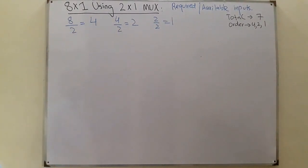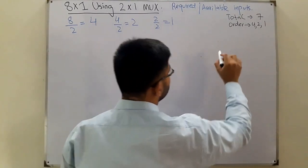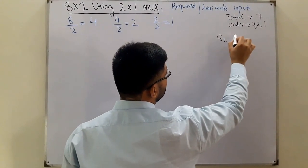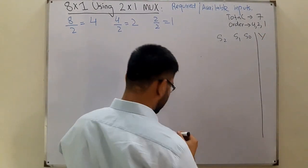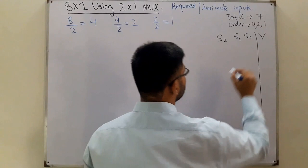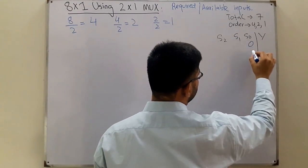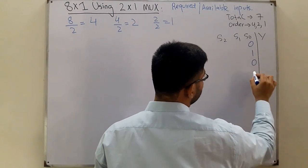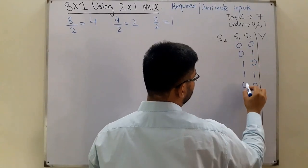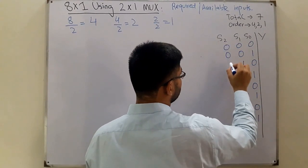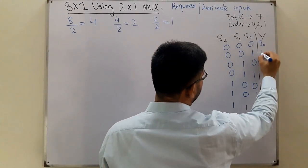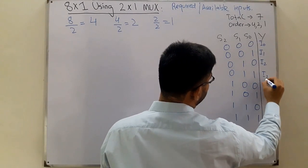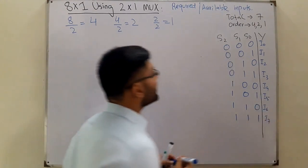Let's draw the truth table first. We have S2, S1, S0, and Y. Filling it in from 0 to 7, with groups of 2 and groups of 4 for the select lines, and the outputs are I0, I1, I2, I3, I4, I5, I6, and I7.